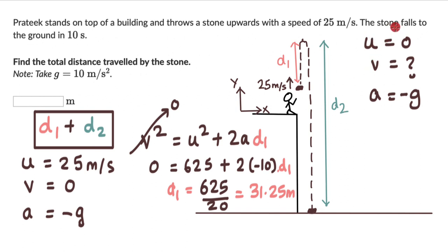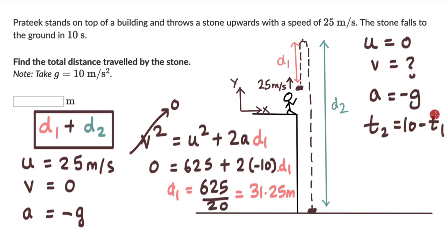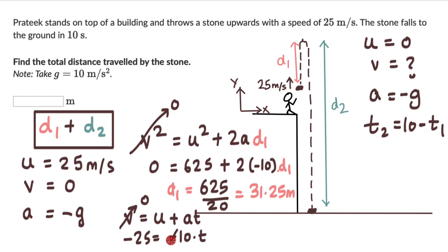The question tells us the stone falls to the ground in 10 seconds total — from when it leaves Pratik's hand until it reaches the ground. If we find the time for the first part of the journey, we can subtract it from 10 to get the time for the second part. For part one, using v = u + at: 0 = 25 + (−10)·t, so t1 = 2.5 seconds.